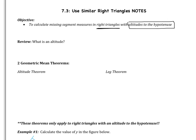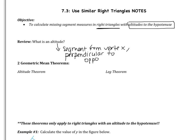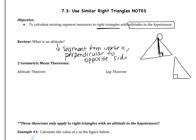An altitude is a segment from the vertex and it's perpendicular to the opposite side. Drawing a random triangle, here is an altitude — it starts at the vertex and goes to the opposite side forming a right angle. Everything that we learn today applies to right triangles with altitudes to the hypotenuse. Here is my right triangle. The altitude goes to the hypotenuse, which is the longest side — the side across from the right angle.